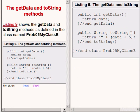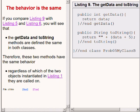The code now showing on the right of your screen shows the definition of the getModifiedData method and the overridden toString method in the class definition for prob05MyClassB. If we were to compare this code with code you saw earlier, you would see that the method named getData and the method named toString are defined the same in both classes. Therefore, these two methods have the same behavior in objects instantiated from the two different classes.